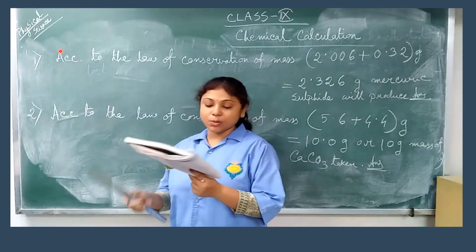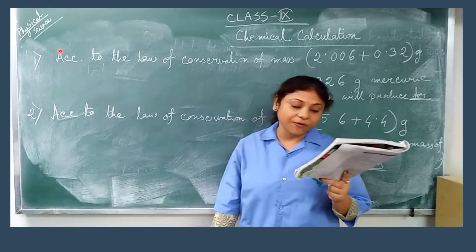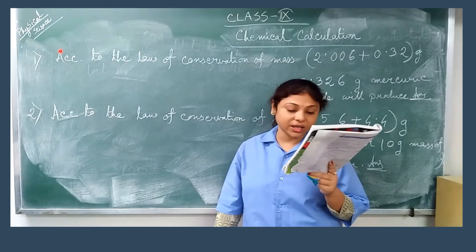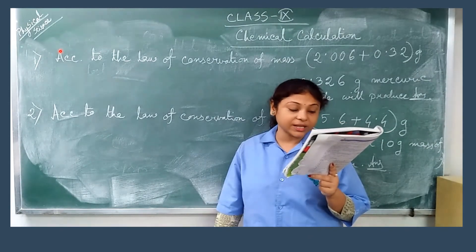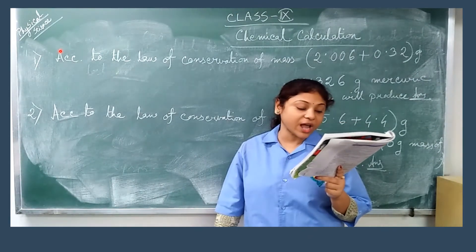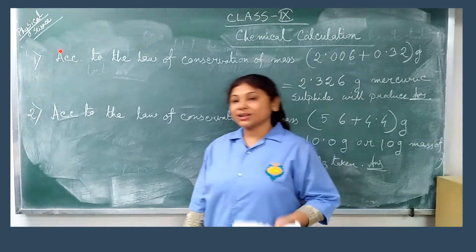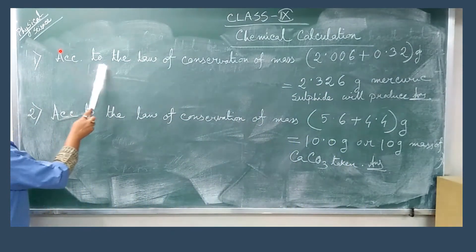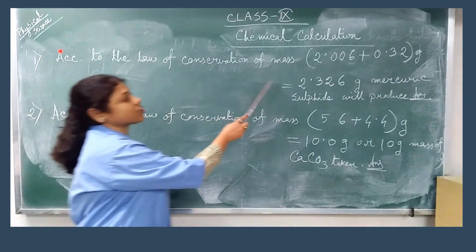First sum is how much mercury sulfide will be produced when 2.006 gram mercury reacts completely with 0.32 gram of sulfur. It's a very easy chapter. Just write according to the law of conservation of mass.